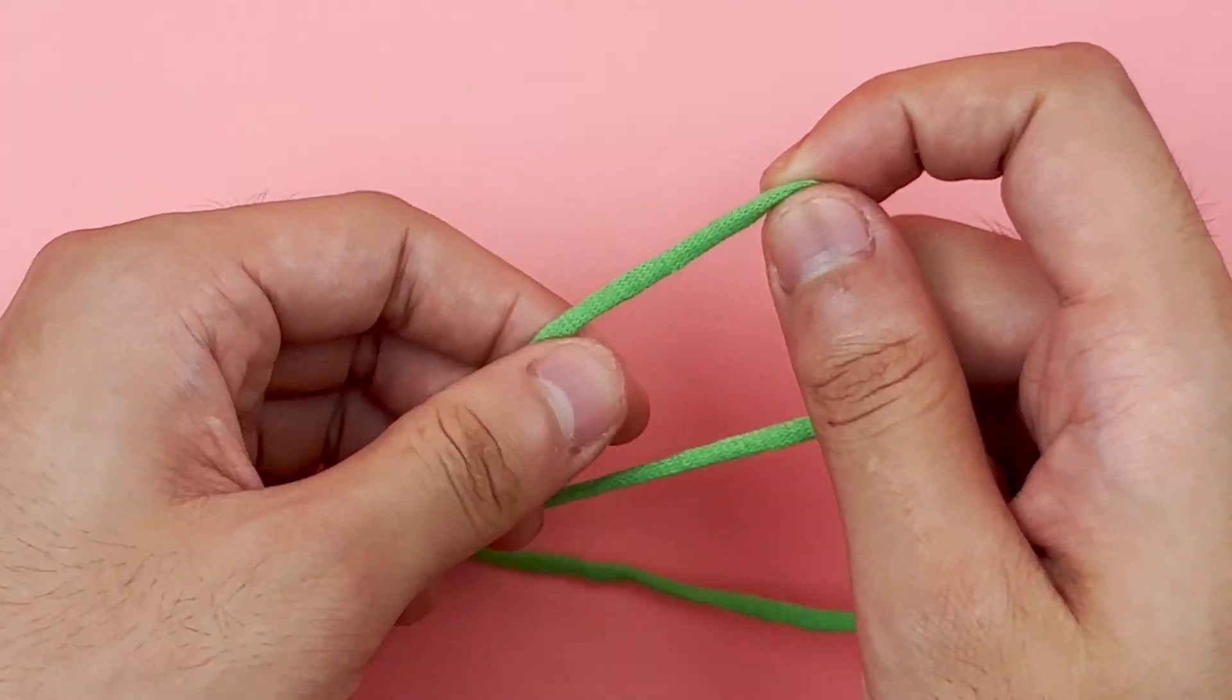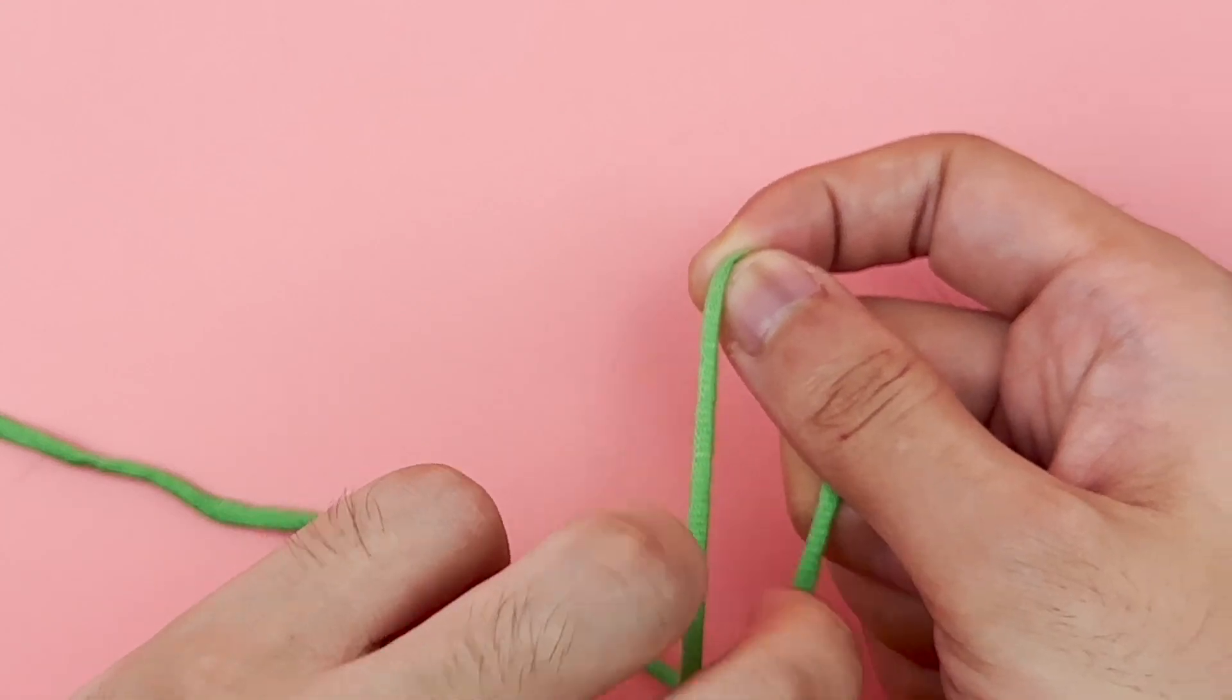Now start crocheting both hands. You need to make a slip knot first.